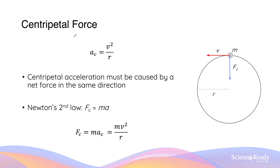The force required to produce centripetal acceleration is called the centripetal force. We can derive its equation using Newton's second law combined with the centripetal acceleration formula. Multiplying mass on both sides of a = v²/r, we get ma = mv²/r. Using Newton's second law, ma equals the net force, so the centripetal force equals mv²/r — mass times linear velocity squared divided by radius.